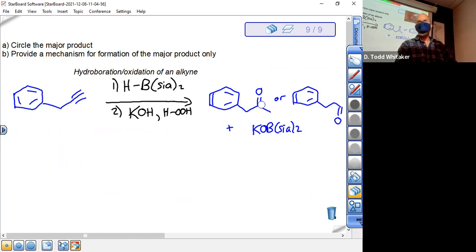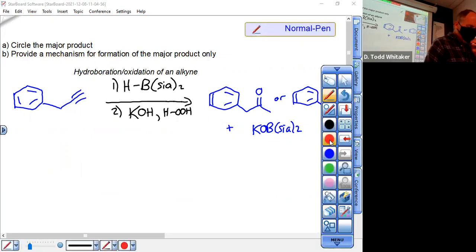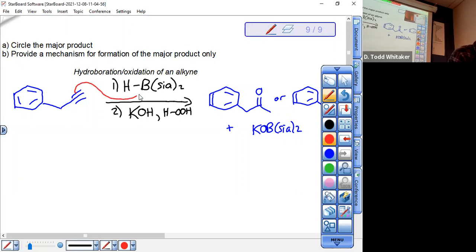It has everything to do with the first step. Let's not circle the major product until we do the first step, where the pi electrons are attracted to the more positive boron. H is more electronegative than boron - H has an electronegativity of 2.1, boron 2.0. So that's why we attack the boron. H goes back to the carbon that spends more time with a plus charge, the secondary one.